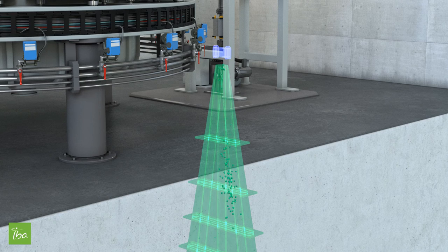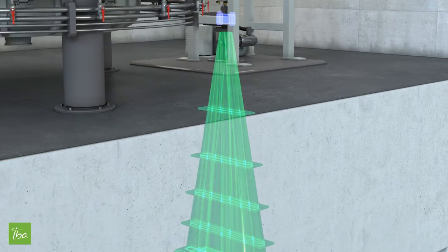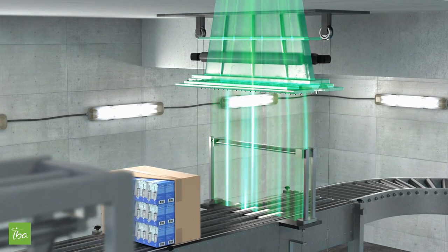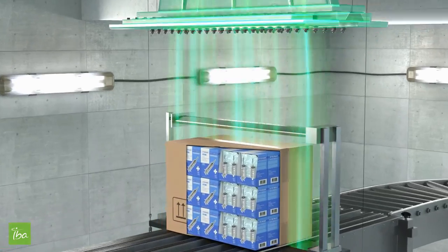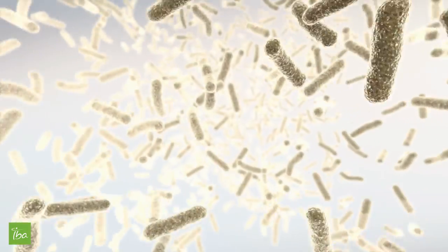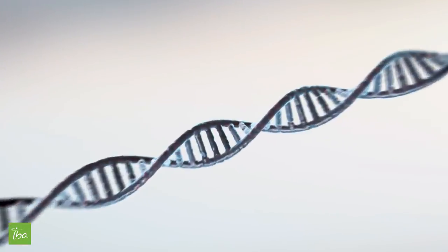The electron beam is then diverted in the scanning magnet to create a curtain of electrons going out of the scanning horn to irradiate the entire boxes of products. When passing under the beam, the boxes are irradiated and the DNA of the bacteria included in the products are damaged by the electrons, preventing them from reproducing themselves.